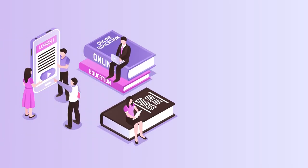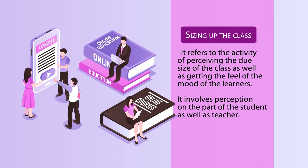The first operation of the interactive phase is sizing up the class. This refers to the activity of perceiving the actual size of the class and getting the feel of the mood of the learners. On entering the classroom, the teacher tries to perceive the classroom climate. Students are also perceiving the behavior, personality and capability of the teacher during this time, so that desirable interaction in the classroom takes place.